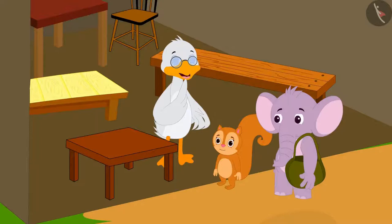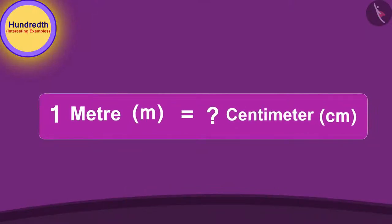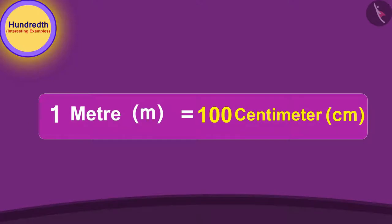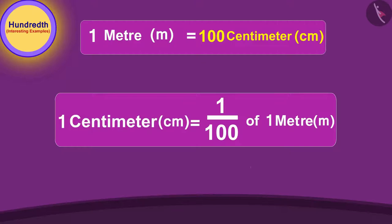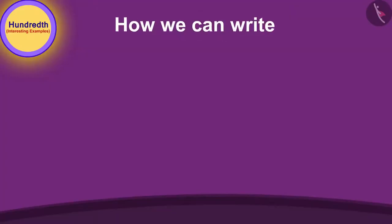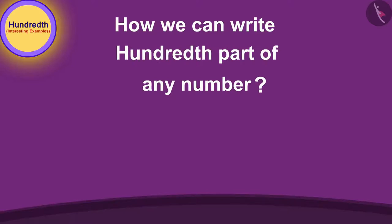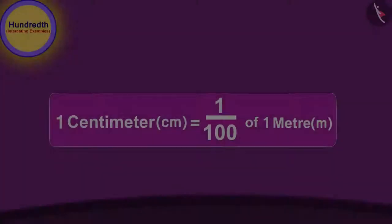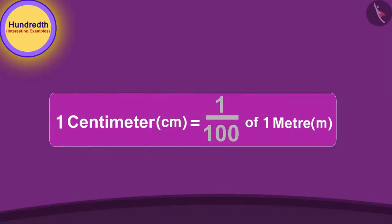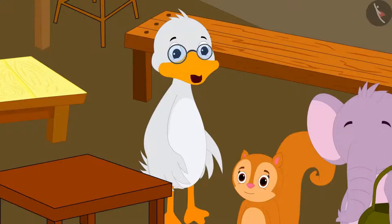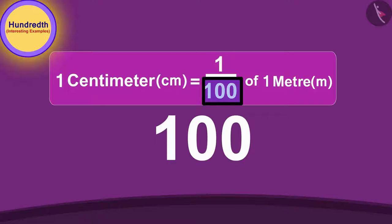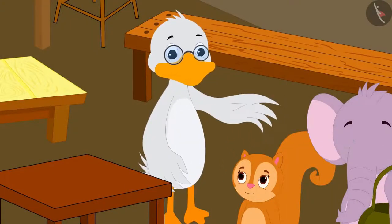Uncle said, "Chanda dear, I will explain to you. Tell me, how many centimeters is 1 meter?" Chanda answered, "100 centimeters." Uncle replied, "Exactly. It means 1 centimeter is the hundredth part of a meter. Let me tell you how we can write the hundredth part of any number using a decimal point. A centimeter is one hundredth of a meter. Here, we are dividing 1 by 100. Can you tell me how many zeros are there in a hundred?" Uncle asked Chanda. She replied, "Two zeros."